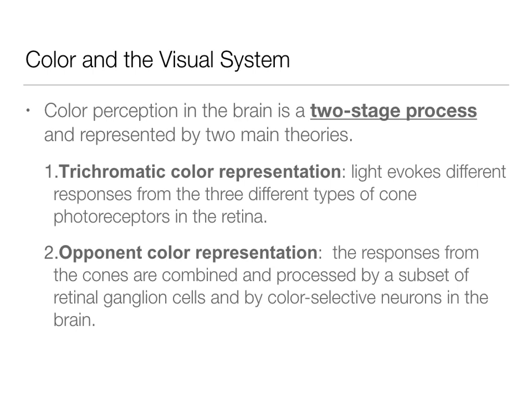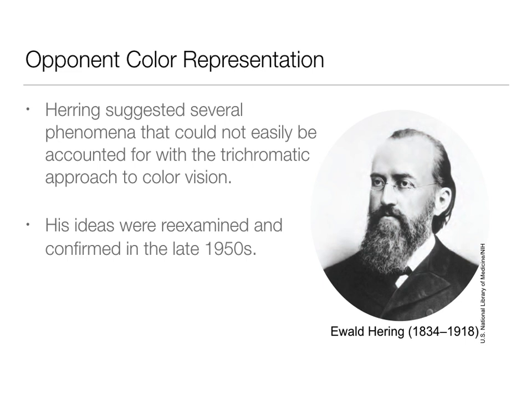This theory helped us further understand color vision and color processing. It was first introduced very early on by Hering, who died in 1918. He didn't have the technology — just like Young didn't — to really support his theory through systematic research. His ideas were reexamined and confirmed in the late 1950s, so these are very well-supported theories regarding opponent color representation.